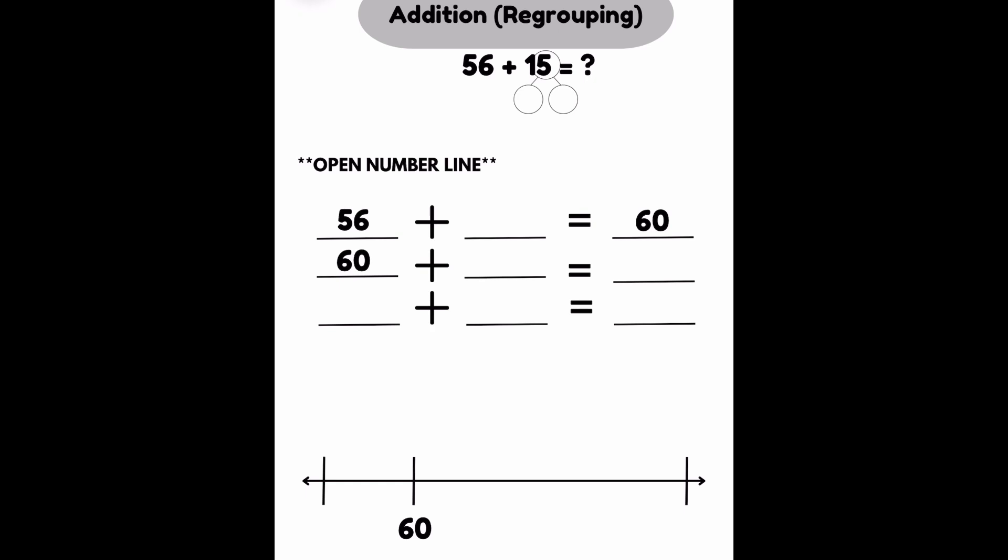So starting off with this first strategy, I'm going to look at an open number line. And if you notice, my equation starts with 56. So that means my number line needs to start with 56. I need to move up to the nearest 10, which in this case would be 60.